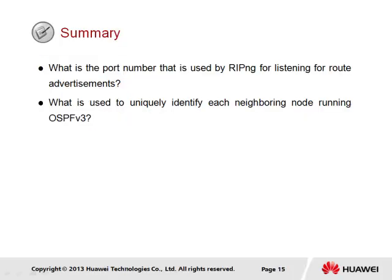To summarize this section on IPv6 routing technologies, two review questions are posed. First, the port number used by RIP-NG for listening to route advertisements is UDP port 521. Second, a 32-bit router ID is used to uniquely identify each neighboring node running OSPF v3, while the interface ID distinguishes the interface on the link, as a router may have multiple interfaces associated with the same link.